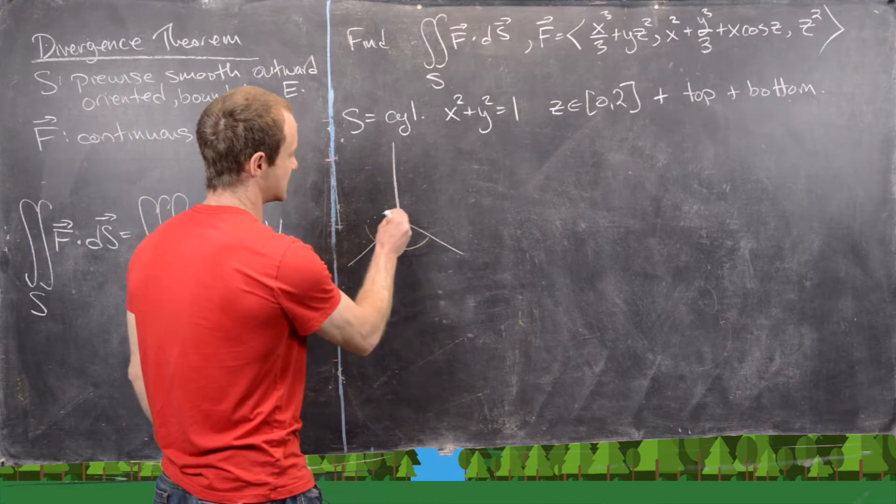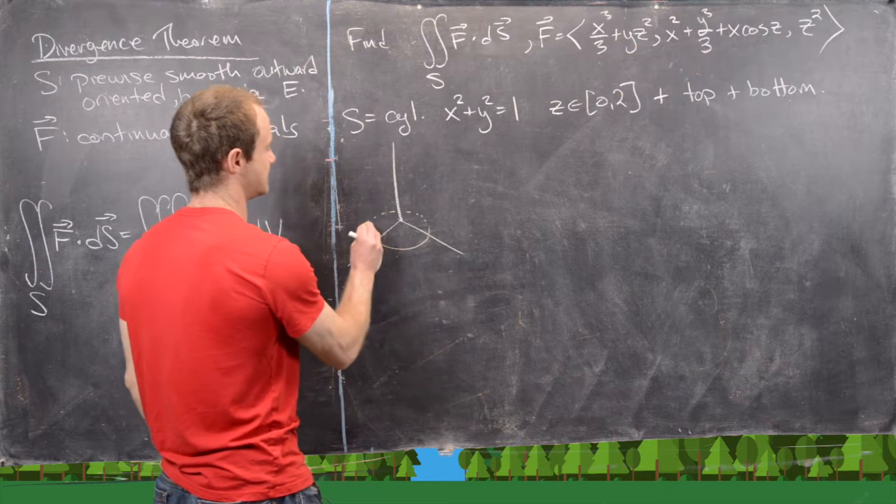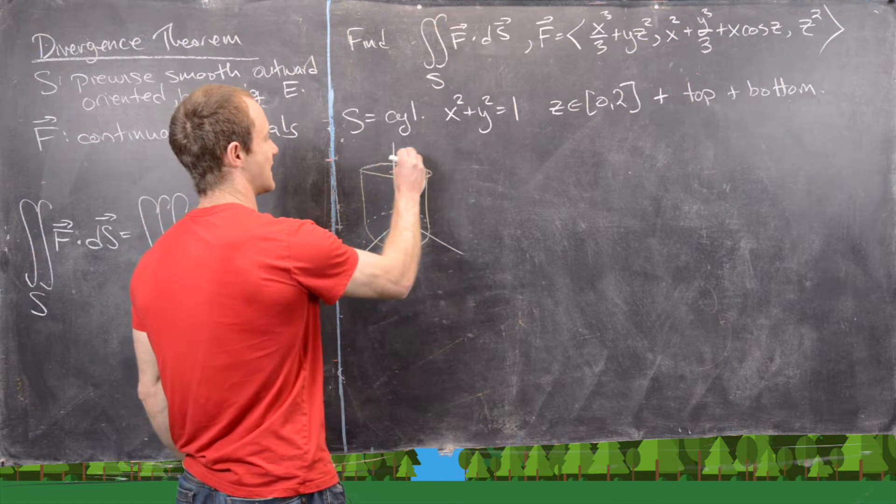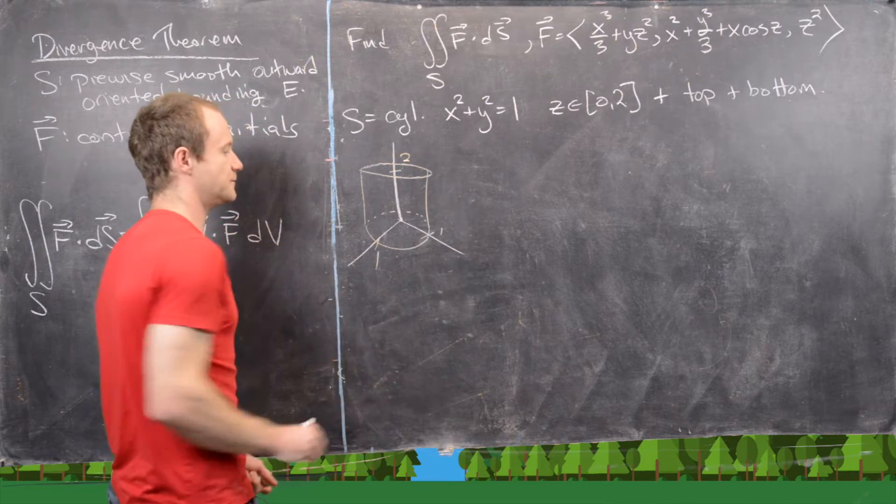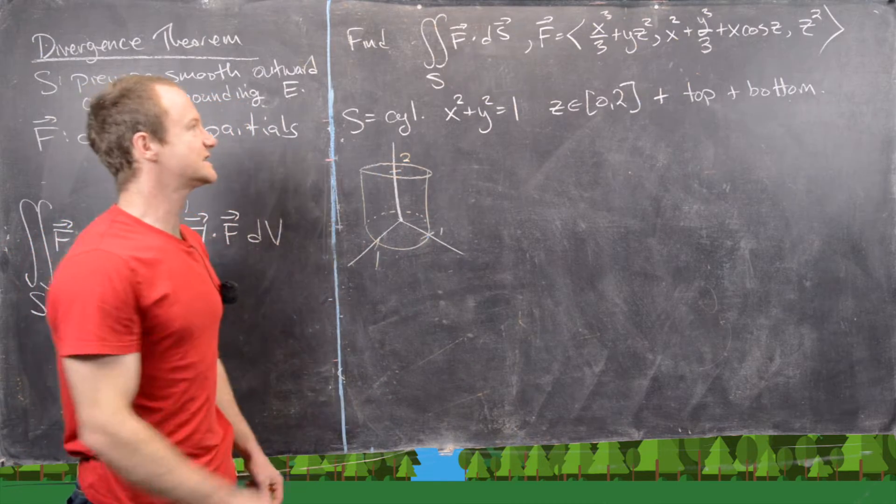So let's see. We've got some picture going like this. So let's say this would be like our z equals two point, and then here we're going radius one. So let's get to it.